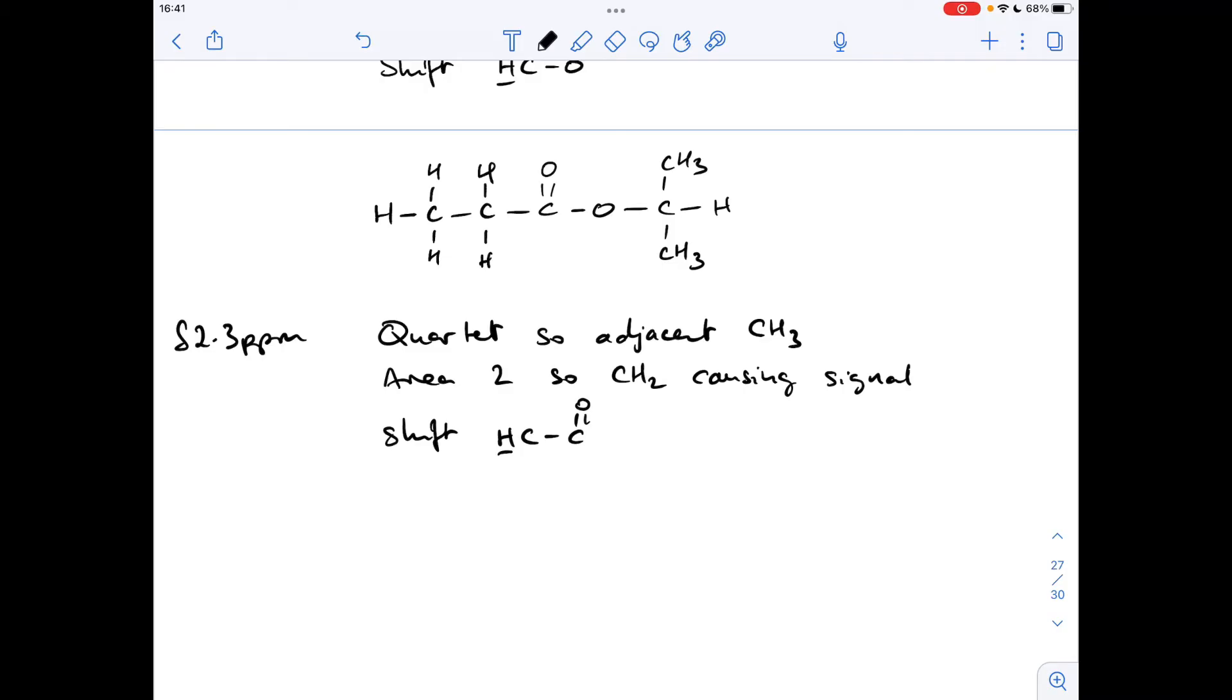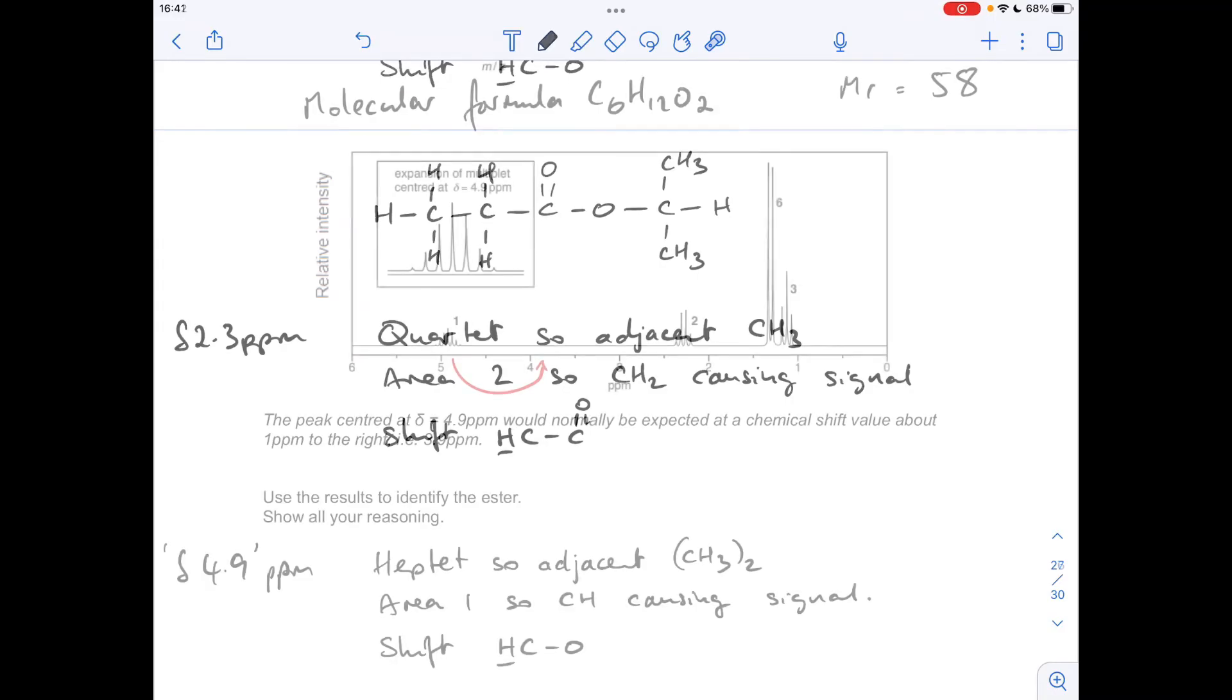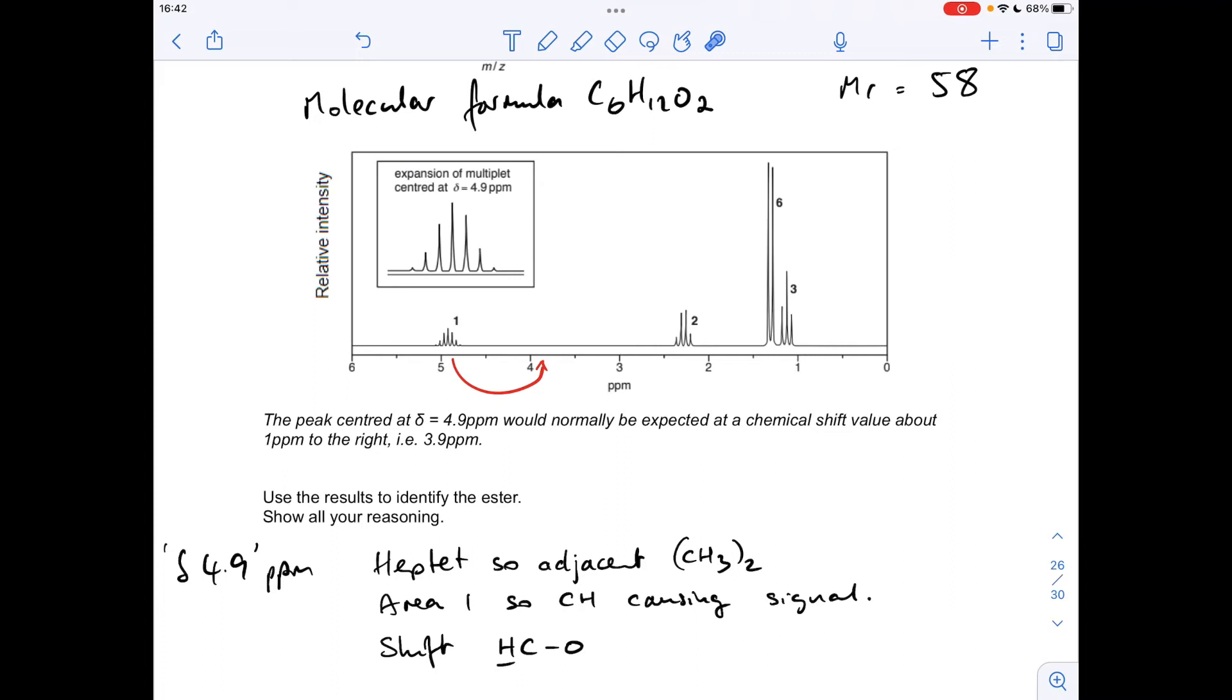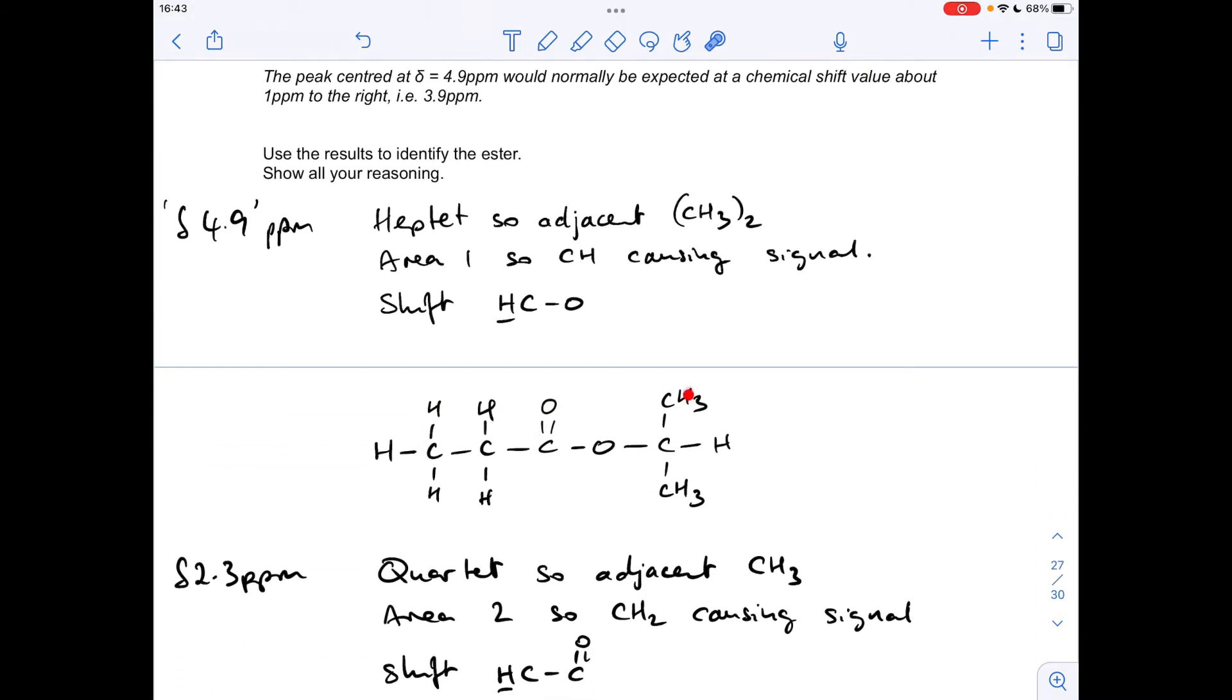But obviously we can't leave it there. The answer can't be left there, otherwise you wouldn't score all the marks. So we're going to have to sort out the other two signals. Moving on to this signal now, we're saying this is around about delta 1.3 ppm. It's a doublet, so that means it's an adjacent CH. The area of 6 is telling us that there's 6 protons in the environment, so it's the two CH3 groups we've already established from a previous signal. And the shift of 1.3 ppm is indicative of H to C to R. So essentially, we're talking about these protons here. Area 6, there's six of them, split into a doublet because of that single proton.